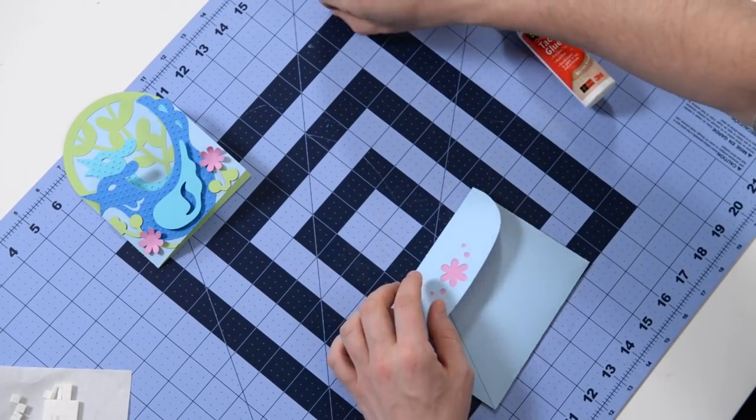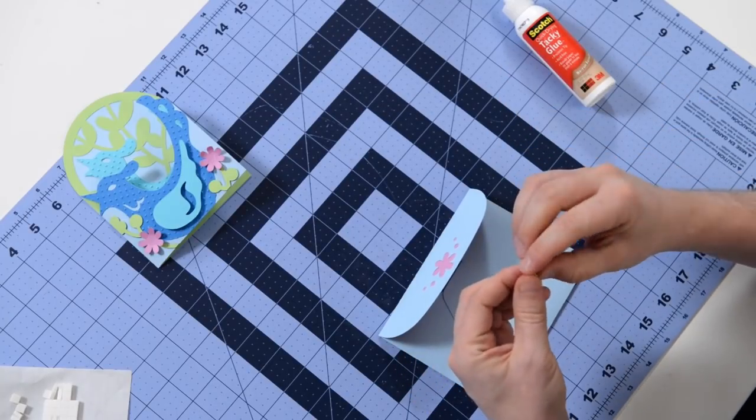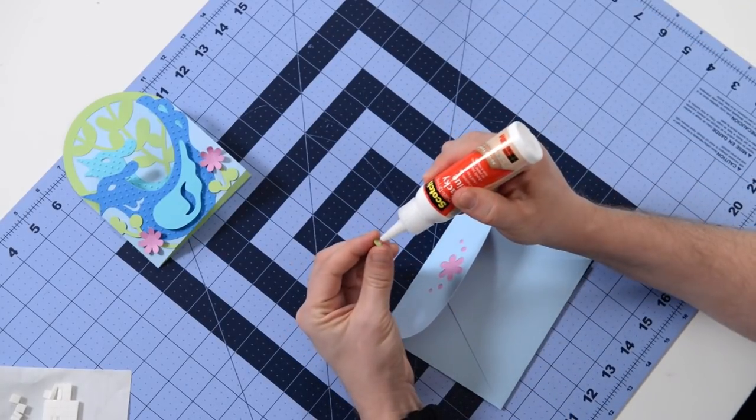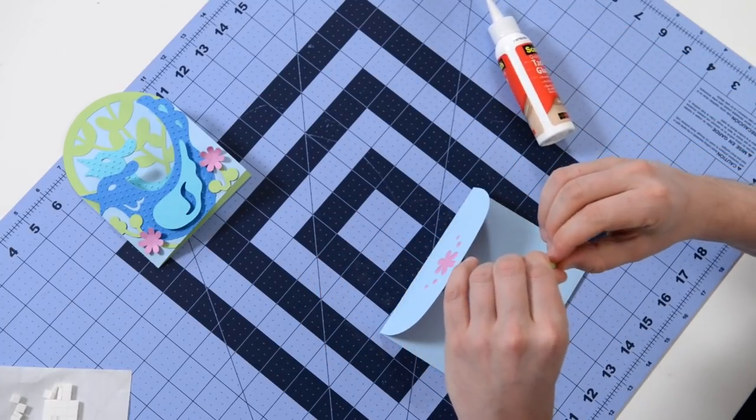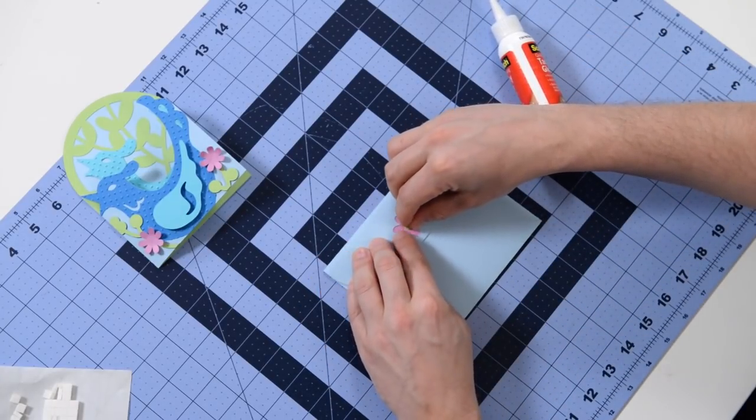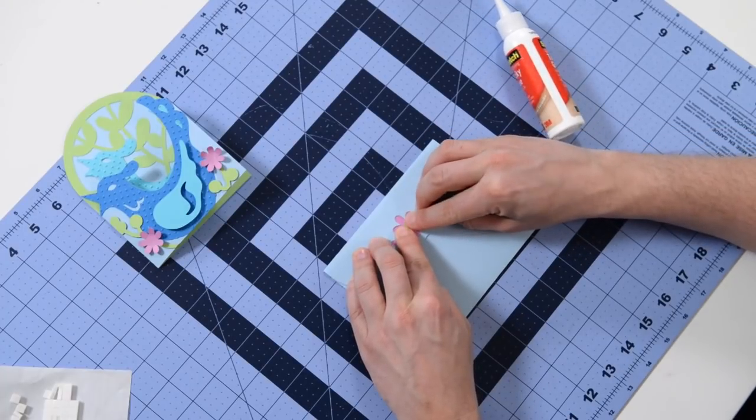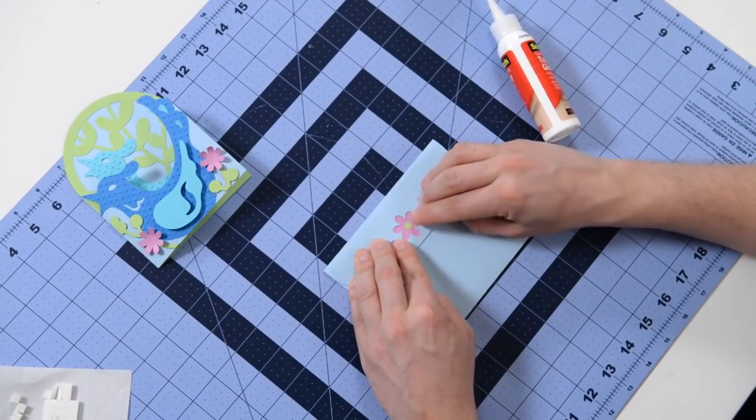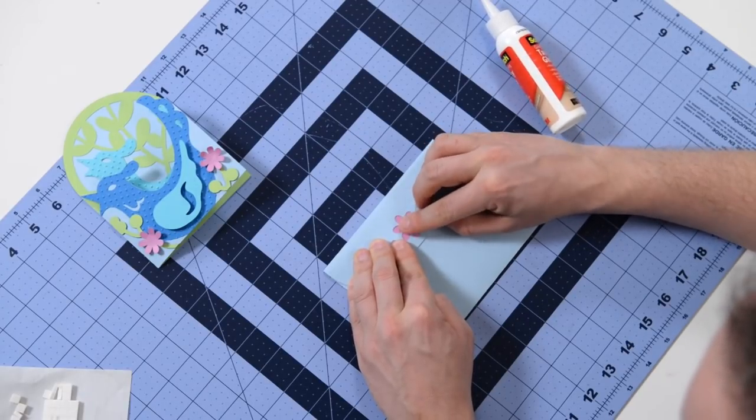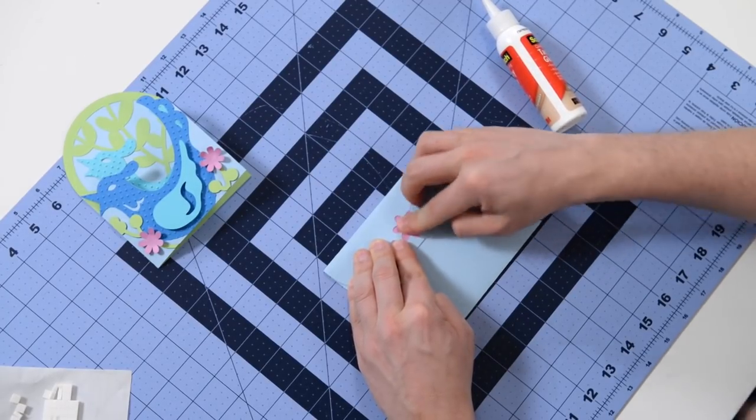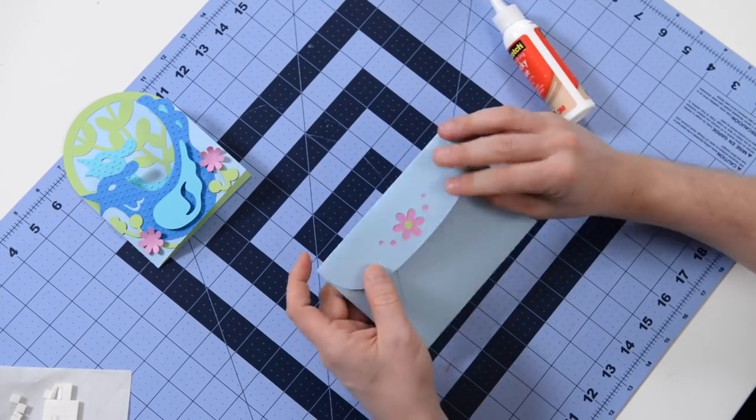And there we go. And we have a tiny little green piece here that we're going to use for the center of our flower. Let me pop that right there. So that's pretty much it.